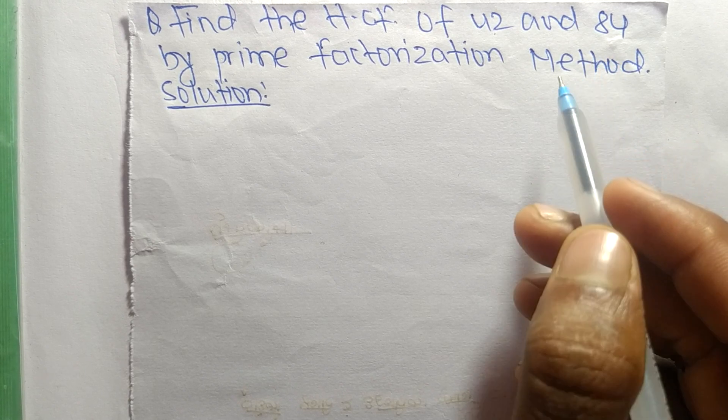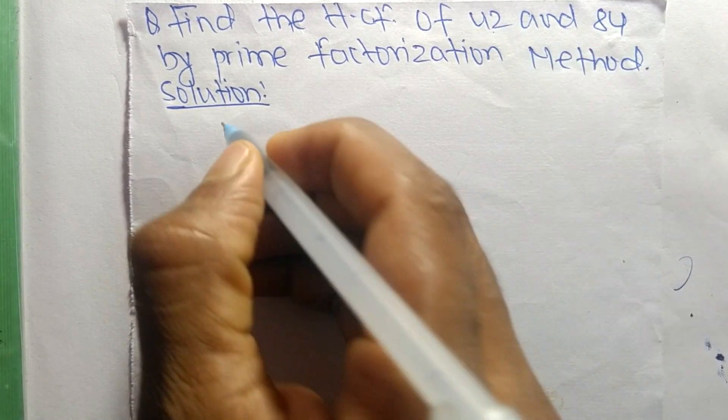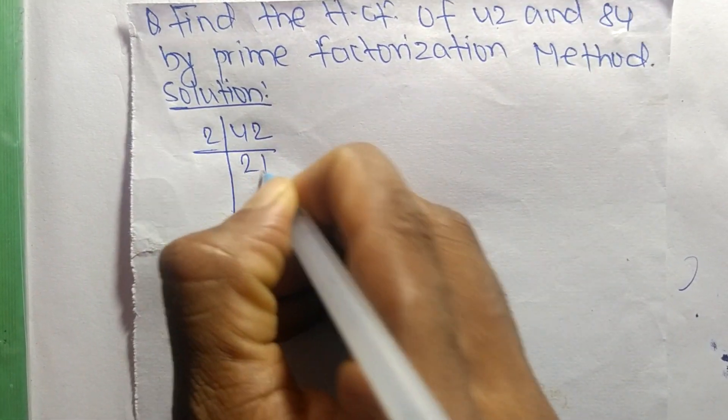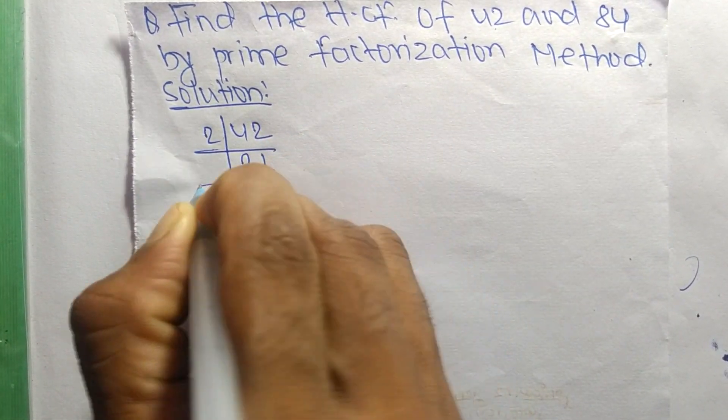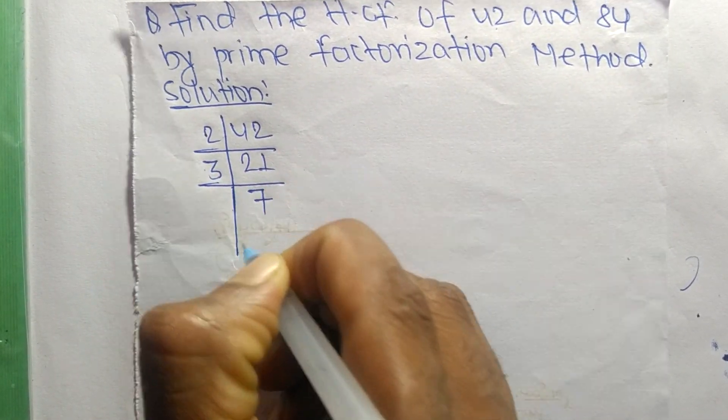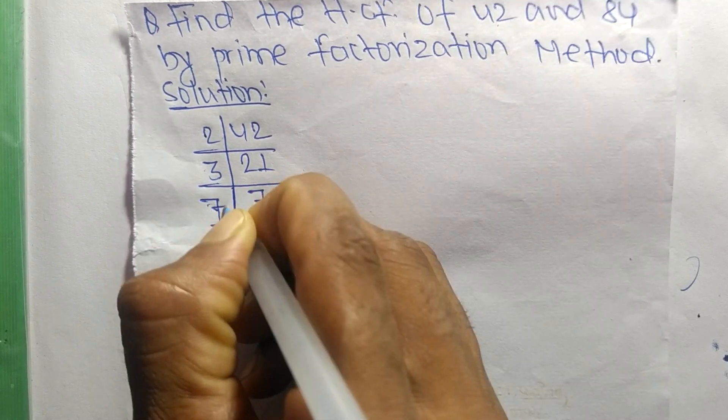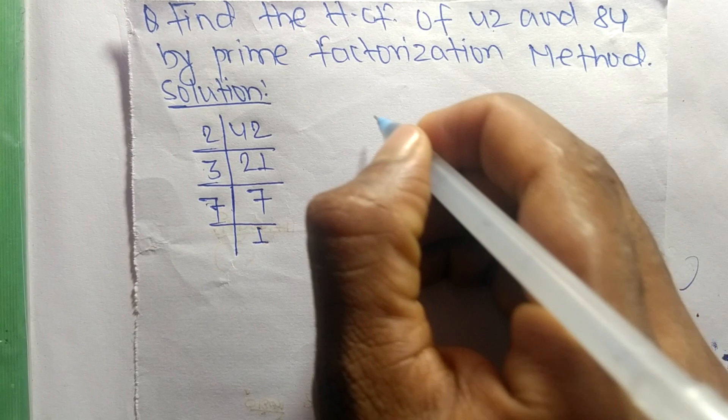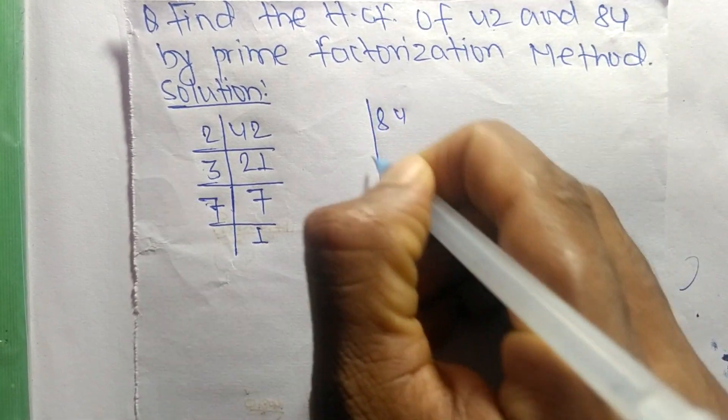So first we find out the prime factors of 42. So it is 2 times 21 equals 42, 3 times 7 equals 21, and 7 times 1 equals 7.